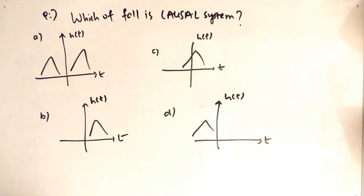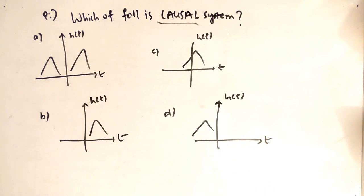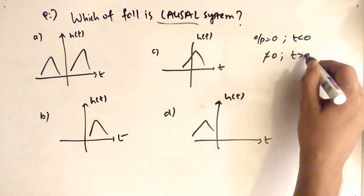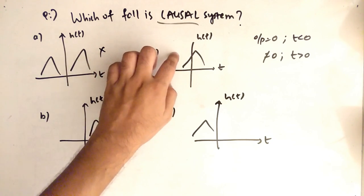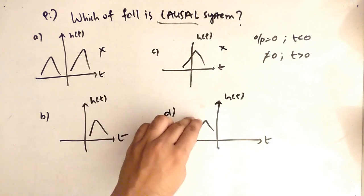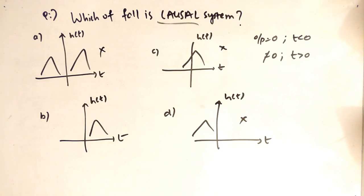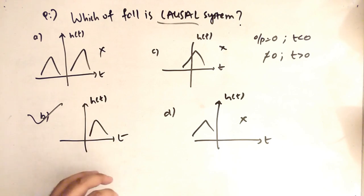The next question asks which of the following impulse responses represents a causal system. The concept of causality requires output=0 for t<0. Looking at each graph: options A, C, and D all have output present on the negative side, so they cannot be causal. Only option B has zero output for t<0 and nonzero output for t>0. So the answer is B.